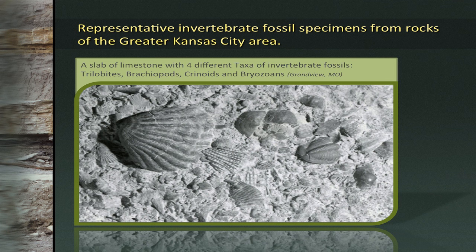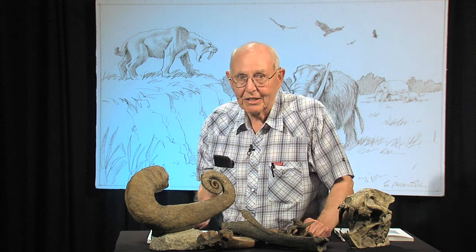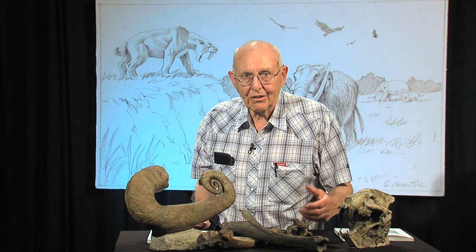Here's a slab of limestone from 87th Street and Blue River Road, from a unit called the Middle Creek. It has several species: a trilobite, brachiopods, pieces of crinoids, lacy bryozoans, twig-shaped bryozoans, and a spine from an echinoid — all on one slab. These rocks are beautifully fossiliferous, and all these creatures lived on that sea floor.